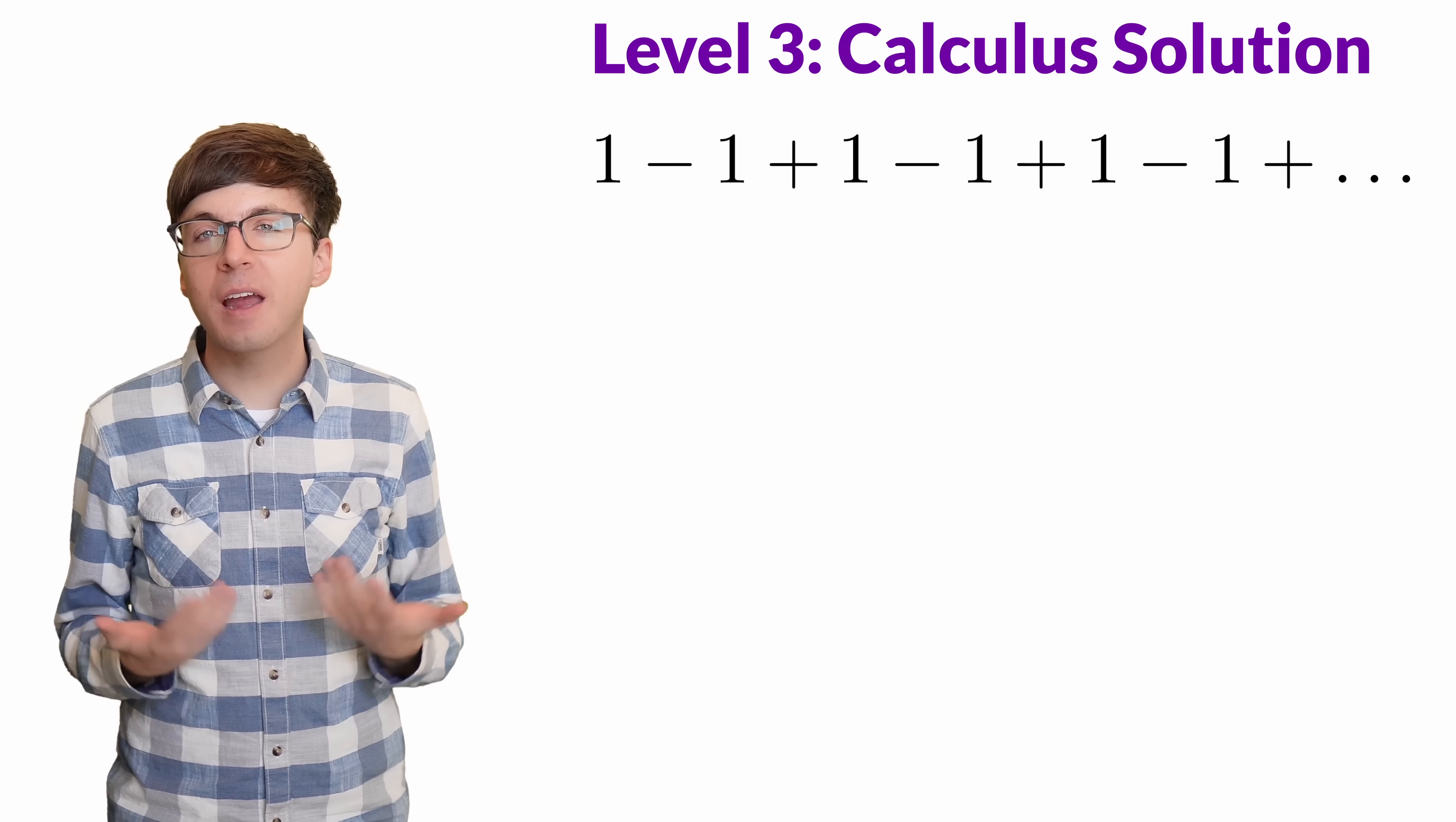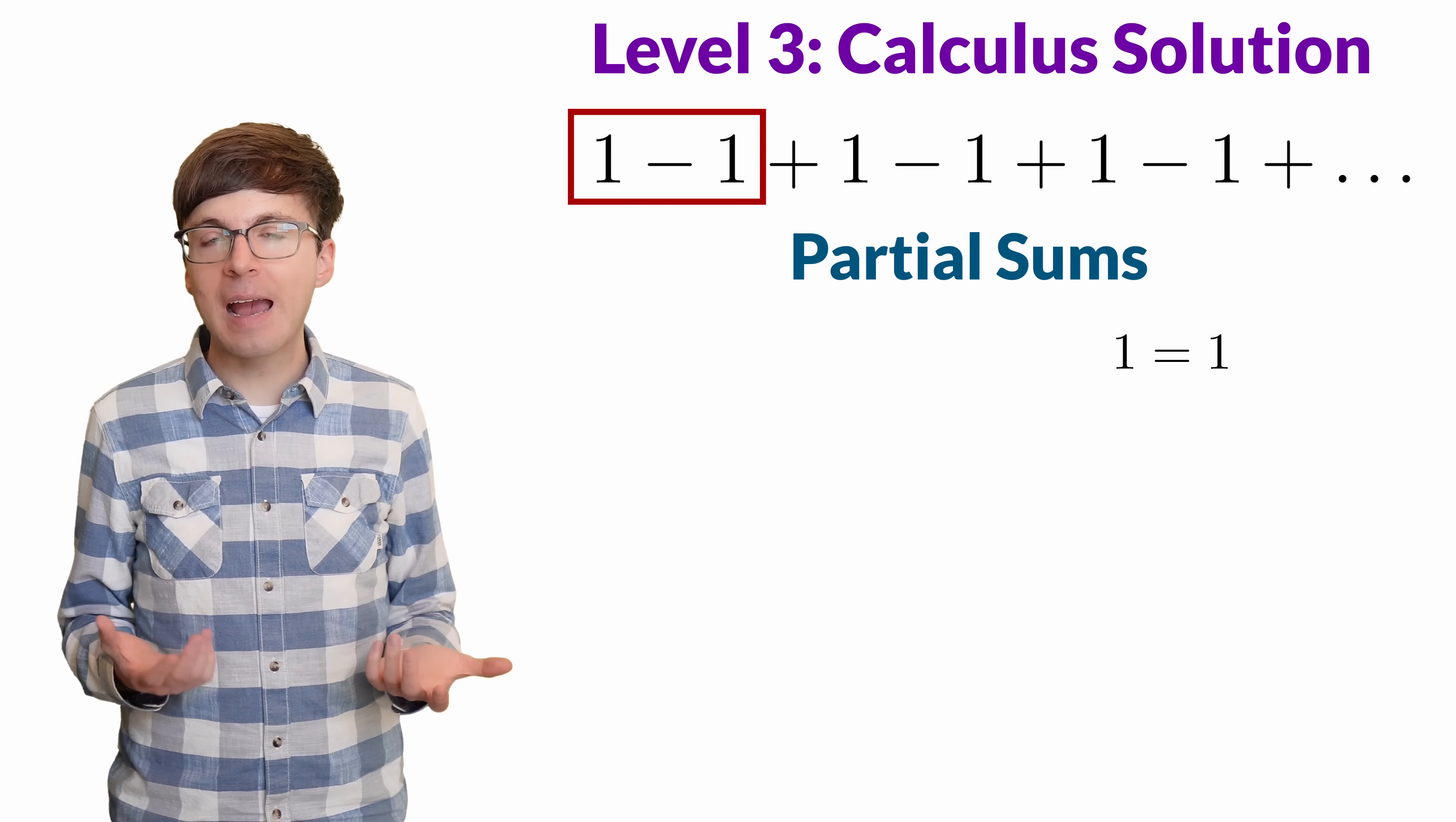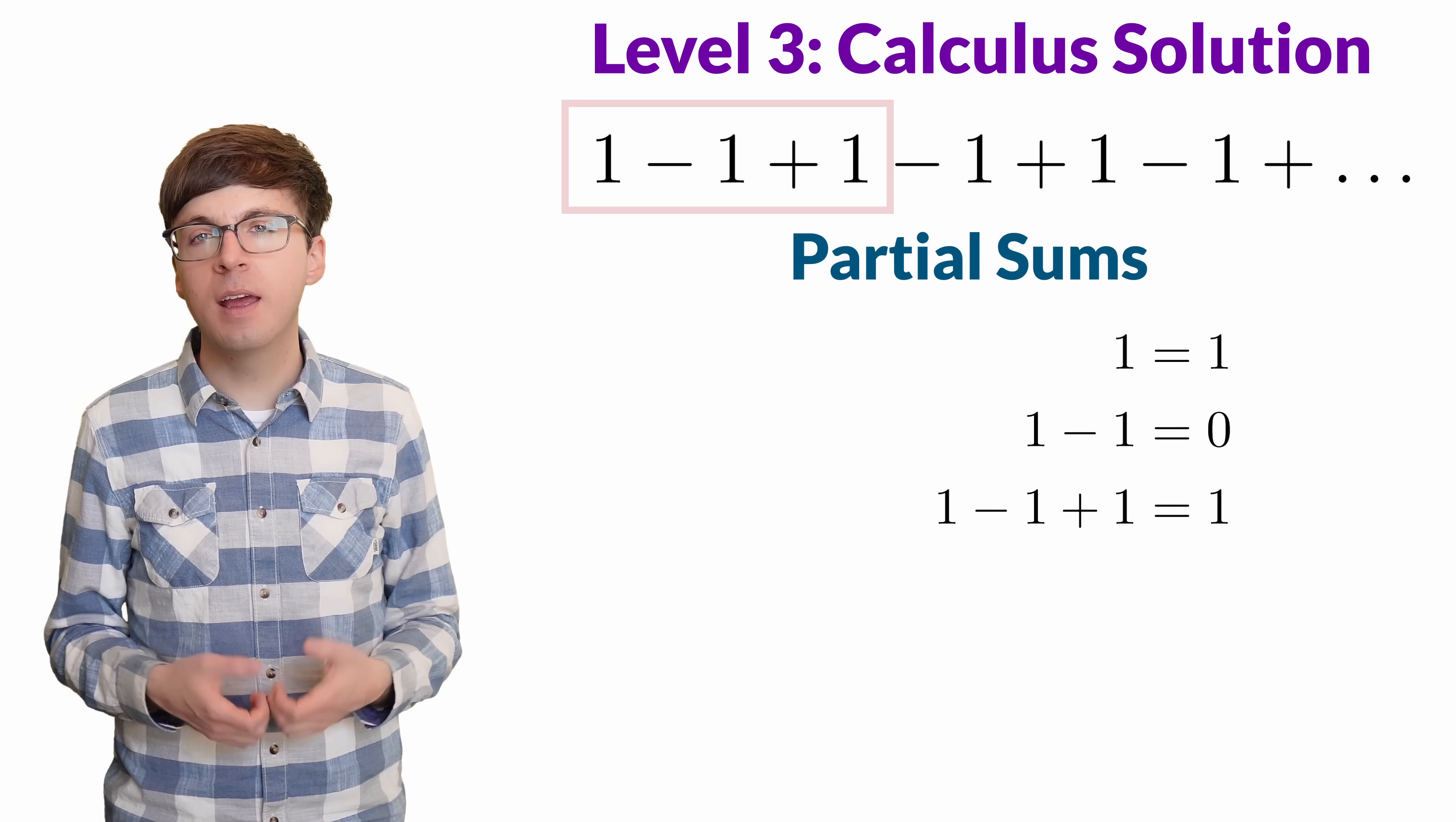For level 3, let's look at the calculus solution. To find an infinite series like this, we look at the partial sums. The first partial sum is just the number 1. The second partial sum, we get by adding up the first two numbers. 1 minus 1 is 0. And then the next partial sum, we add up the first three terms. 1 minus 1 plus 1 is 1. And so on.